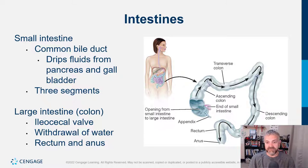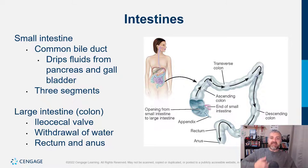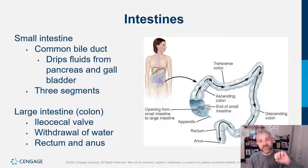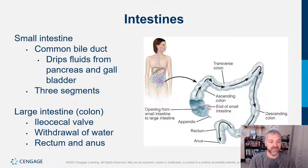The large intestine: the cecum is the pouch that captures material from the small intestine, with the appendix dangling off it. Then we have the ascending colon up the right side, the transverse colon across the top, the descending colon turning into the sigmoid colon because of its S-shape, and then the rectum and anus — the rectum being where we temporarily store feces, and the anus where we eliminate it.